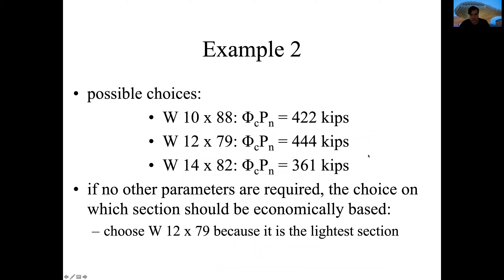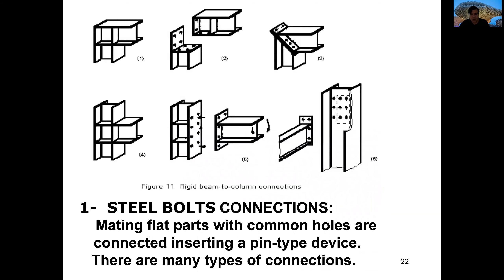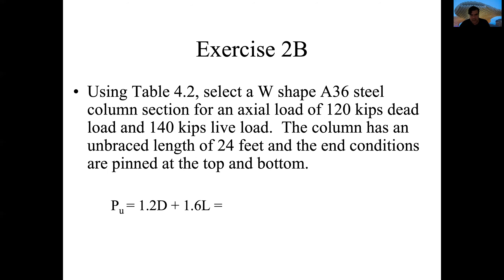From the three possible choices, if there is no other parameter, the choice depends on the one that is most economical. Obviously these columns will have some kind of connections, and we will have a specific chapter doing calculations of how those columns will be attached to the ground and to the particular beams or roof they are supporting.